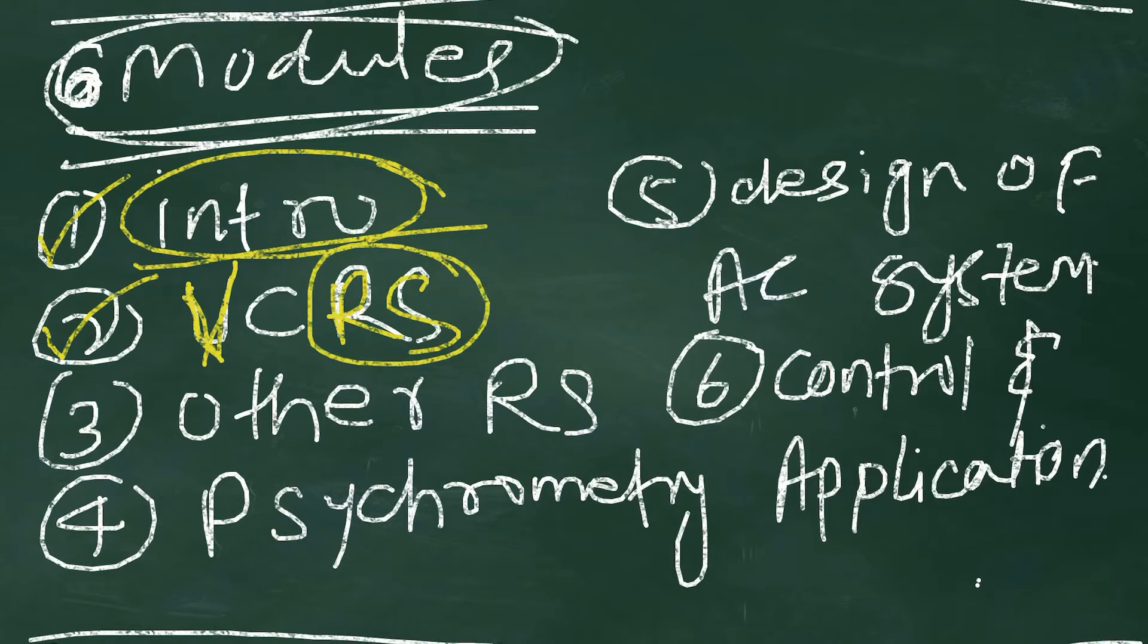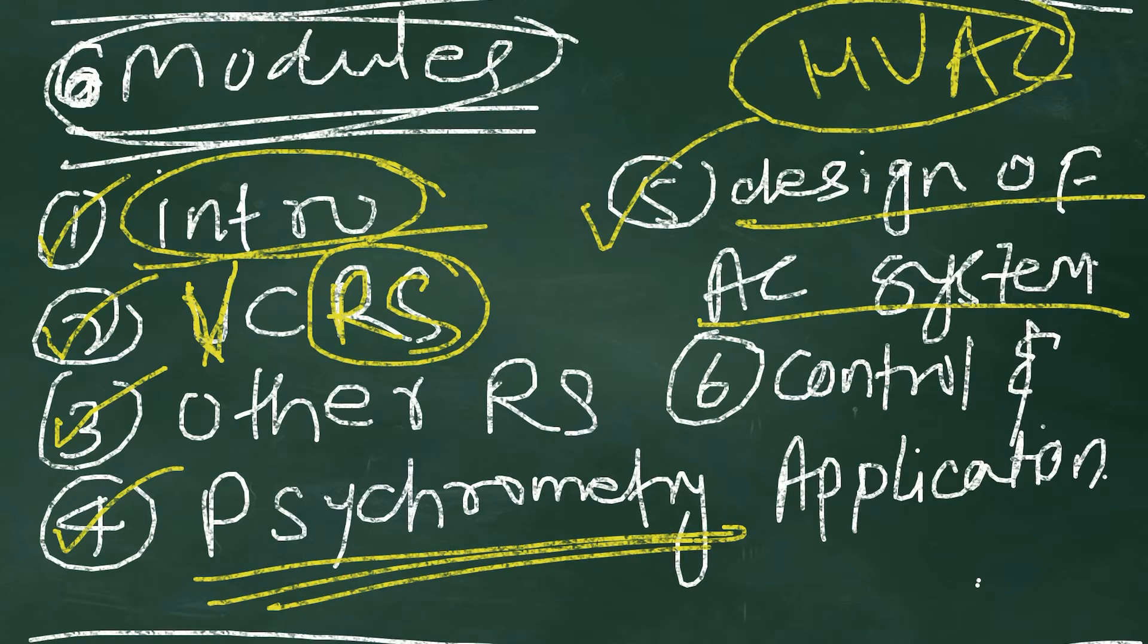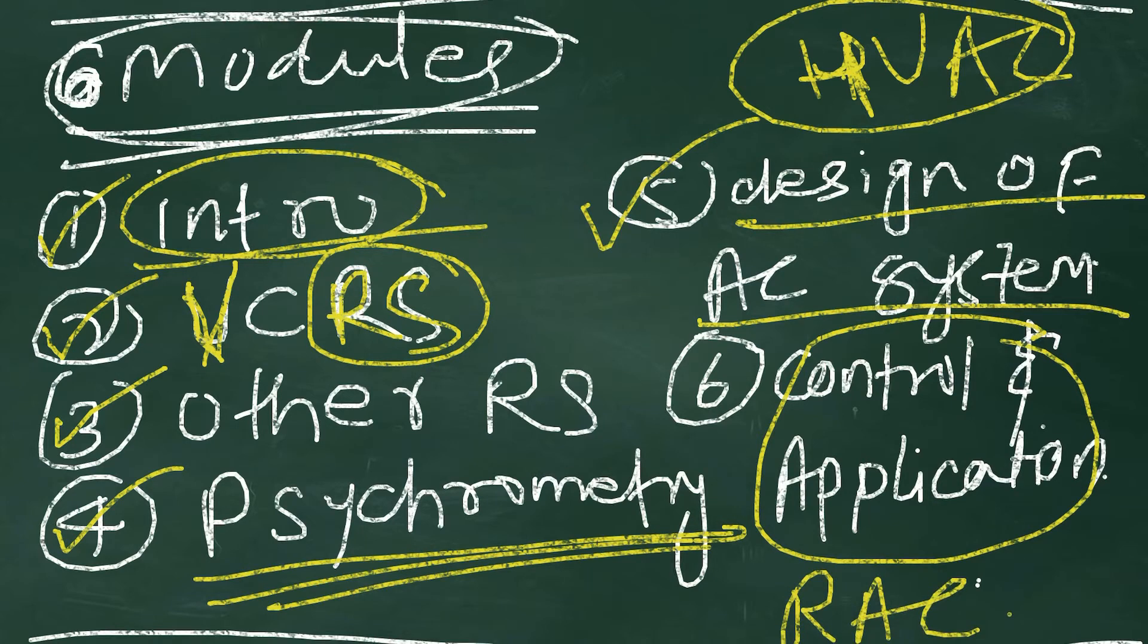The fourth module is psychrometric - we'll discuss psychrometry, applications, types, and so on. The fifth module is design of AC systems - HVAC design. The final module is control and application - the controls and applications of RAC.